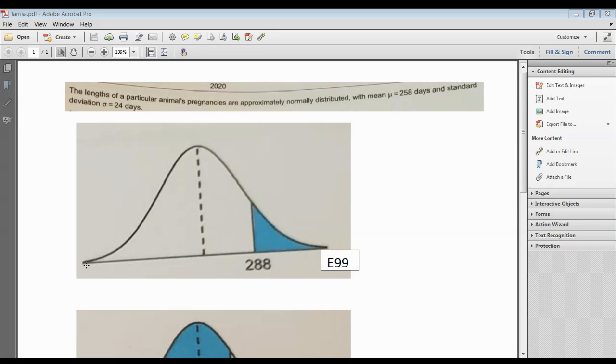And the same thing applies when you're going to the left. It's not positive E99, it's negative. So this is your lower limit, this is your upper limit. You put in mean, and you put in standard deviation.